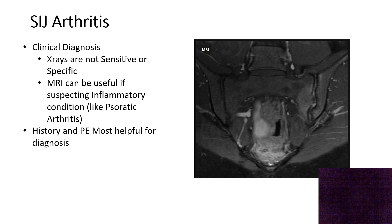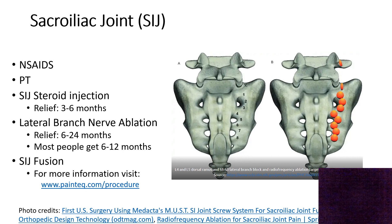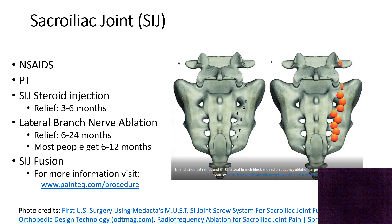An MRI showing inflammatory sacroiliac joint arthritis — probably from a patient with psoriatic arthritis — shows inflammation lighting up brightly on a T2-weighted MRI, as opposed to the other side which remains dark. The way you treat SI joint arthritis is typically with NSAIDs first-line. Physical therapy can be helpful. You can do an SI joint steroid injection, which gives relief from three to six months. Notably, steroid injection is not an option offered for lumbar facet arthritis because studies show it wears out the facet joints faster and gives a worse outcome.